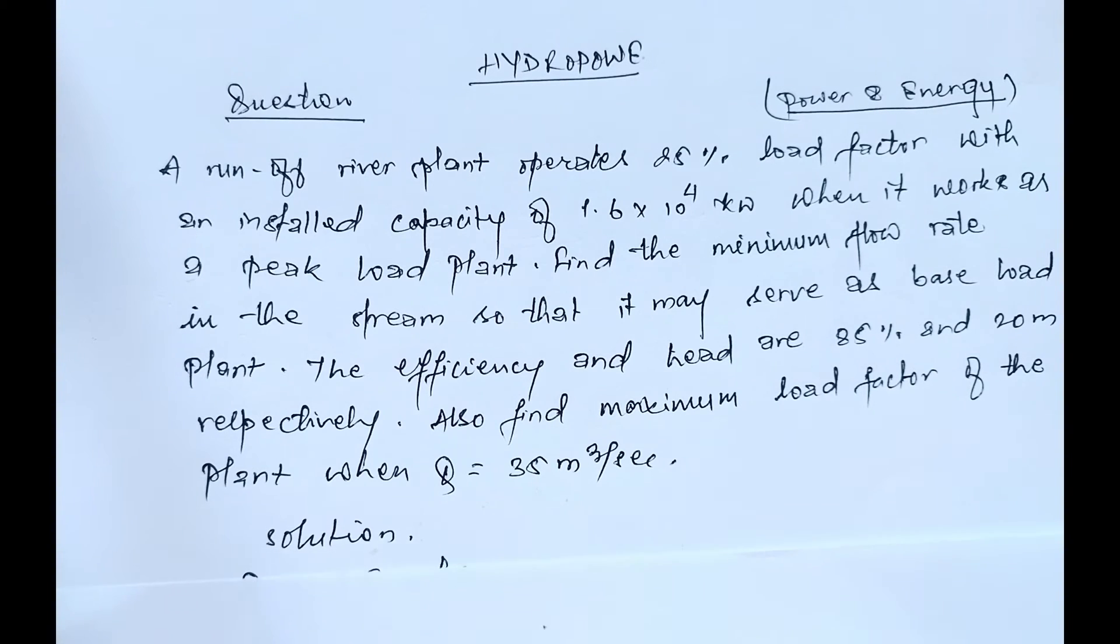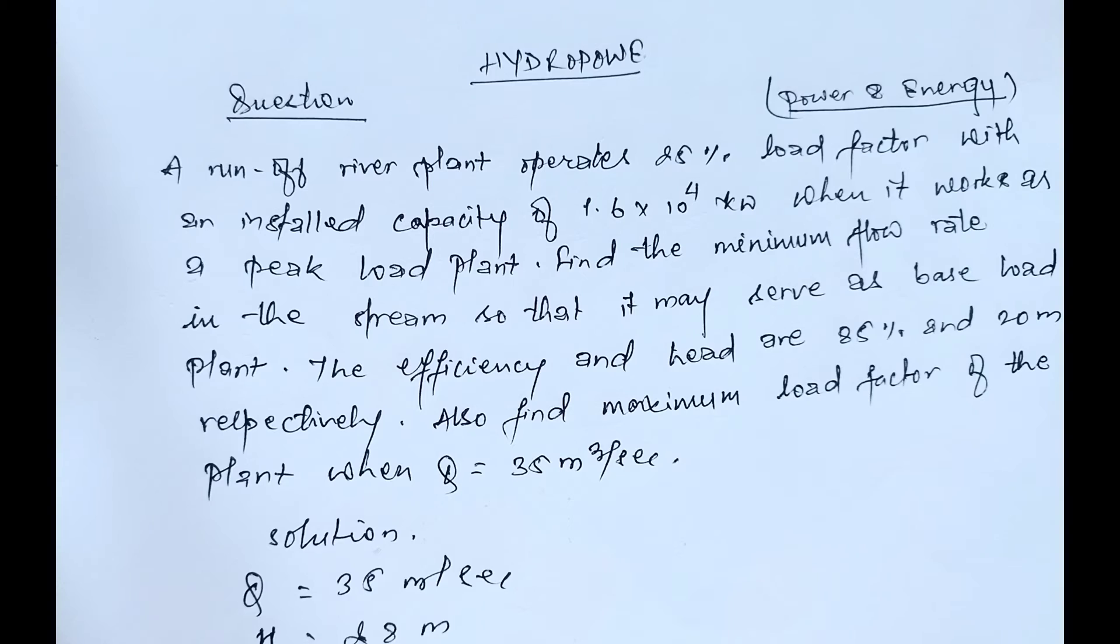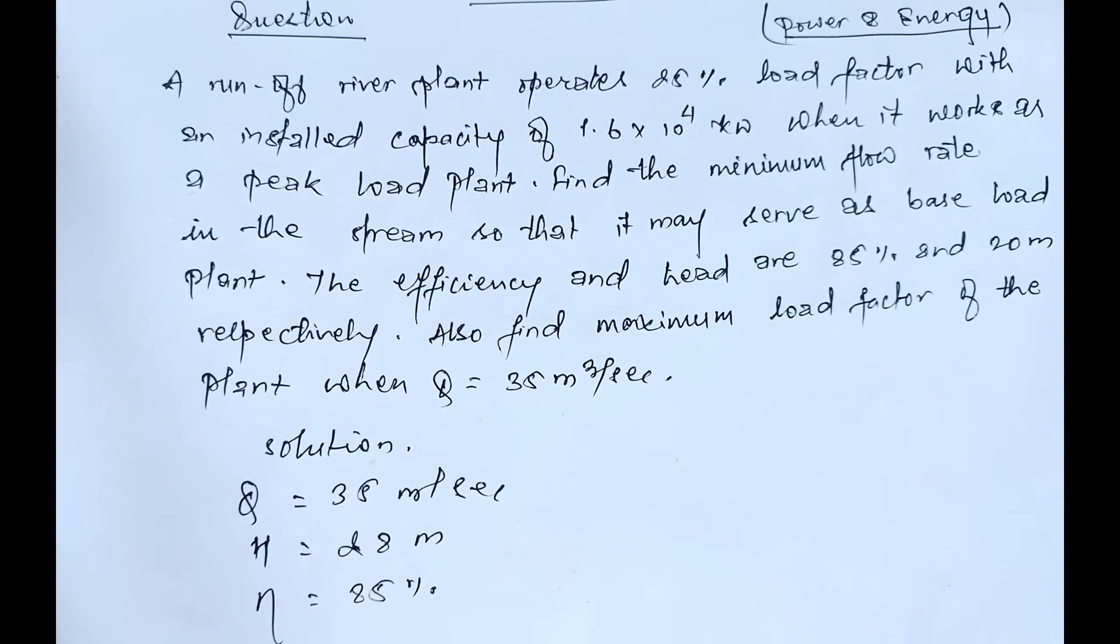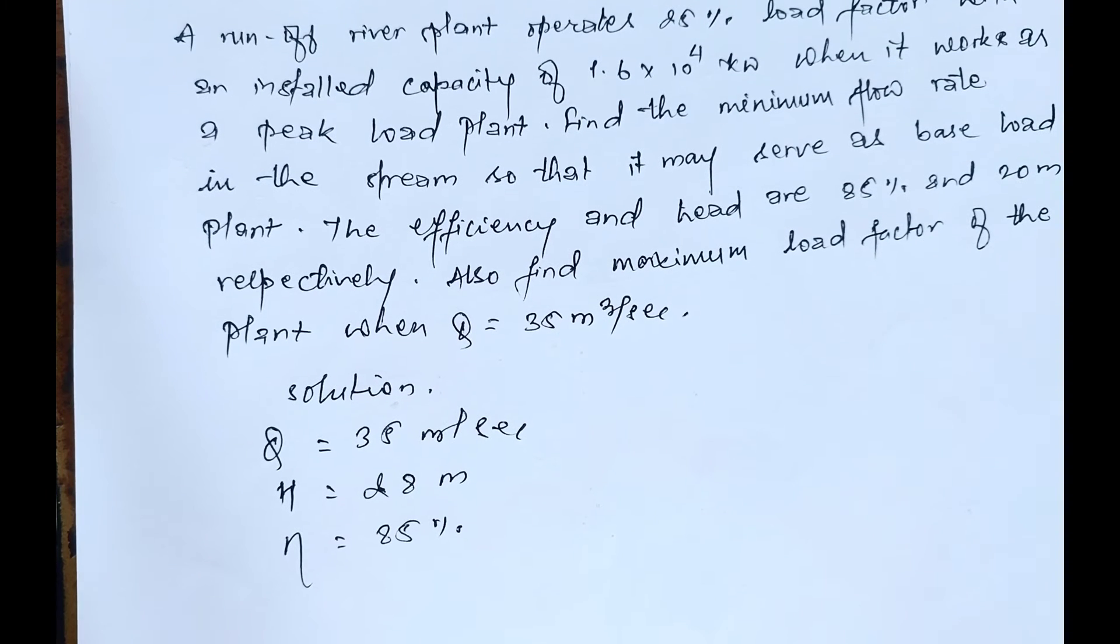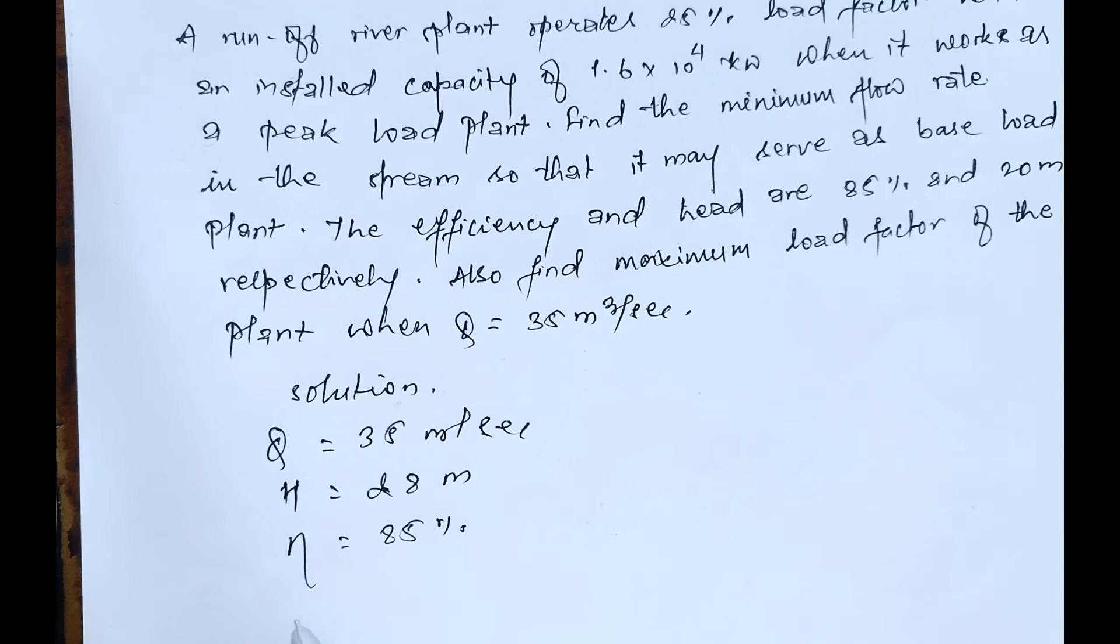So let's start the question with the given data: discharge Q equals 35 m³/s, head equals 28 meters, and efficiency equals 85%. Let's start with the average power as peak load with load factor of 25%.